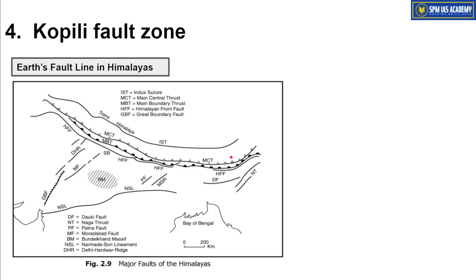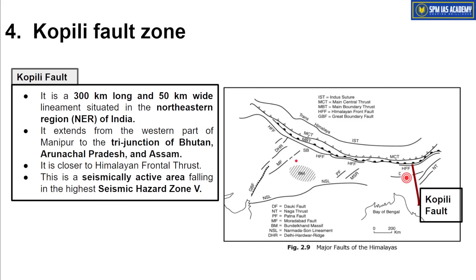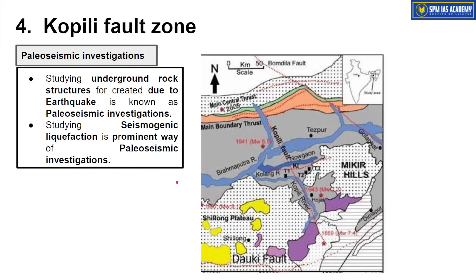Many fault lines exist along the Himalayas, created by continent-continent convergence of the Indian subcontinent and the Eurasian continent. In Northeast India, there is a significant fault line along Assam called the Kopili Fault. Because of the Kopili Fault, the entire Assam region falls in Seismic Zone 5, making it highly vulnerable to earthquakes. The Kopili Fault runs along the Kopili River in the Nagaon region.